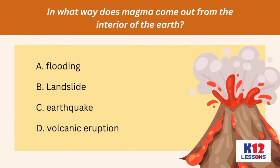Choose the letter of the correct answer. In what way does magma come out from the interior of the earth? A. Flooding. B. Landslide. C. Earthquake. D. Volcanic eruption.